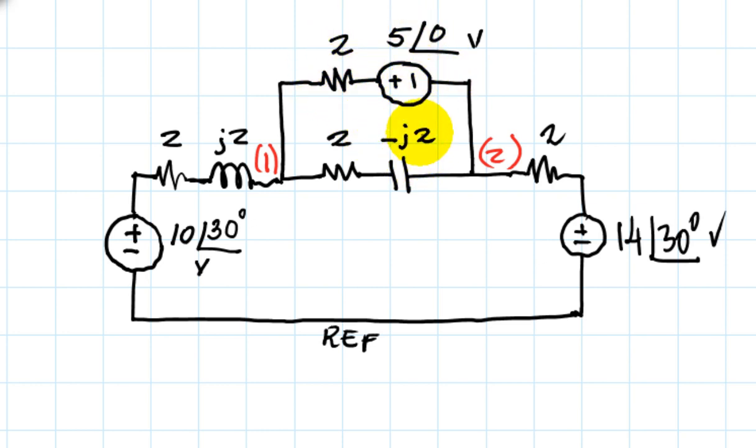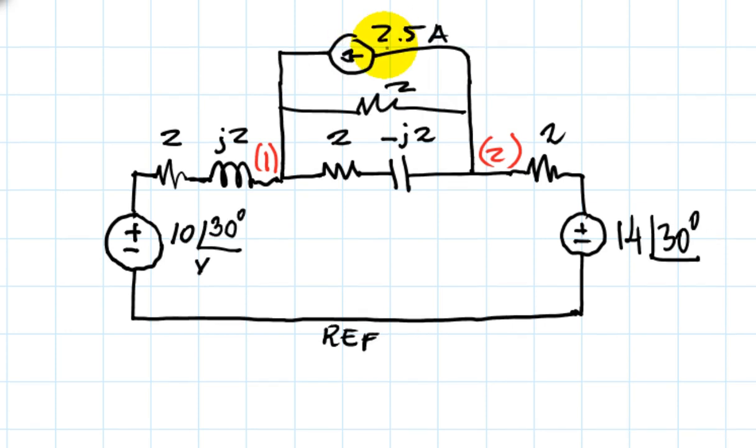That is the 7-Ohm branch. By the way, 5 with 0 degrees, that is just a real number, that is just 5 volts. We can simplify that to 5 divided by 2 amps in parallel with the 2-Ohm resistor. That would be something like this, 2.5 amps in parallel with 2. No calculator needed so far.